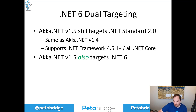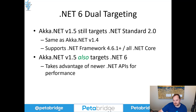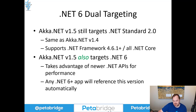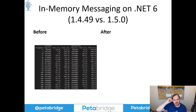However, if you're concerned about performance and you're on the bleeding edge, Aka.NET 1.5 also targets .NET 6 separately from .NET Standard 2.0, so we can take advantage of some of the newer .NET APIs for performance reasons. Any .NET 6 application that references any Aka.NET assembly will automatically use the .NET 6 version rather than the .NET Standard 2.0 version.